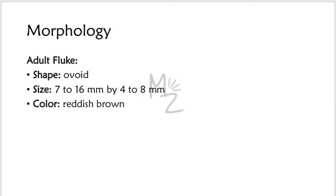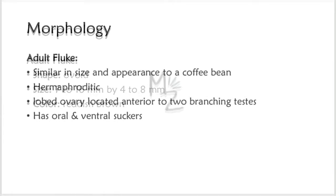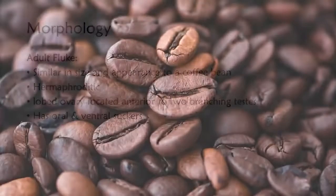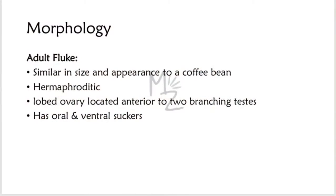The adult fluke is ovoid in shape. It is 7 to 16 millimeters long by 4 to 8 millimeters wide, and is reddish brown in color — similar in size and appearance to a coffee bean. It is a hermaphroditic organism, meaning it has both male and female reproductive organs in the same body. It has a lobed ovary located anterior to the two branching testes.